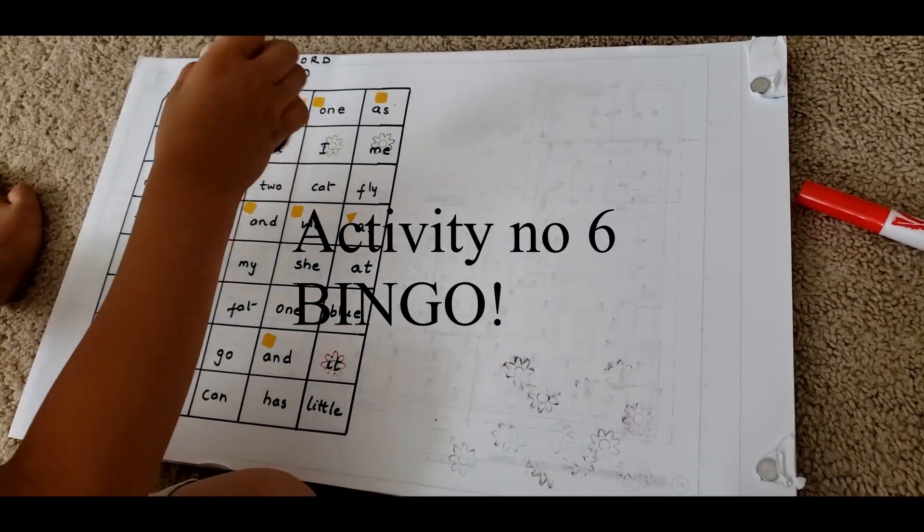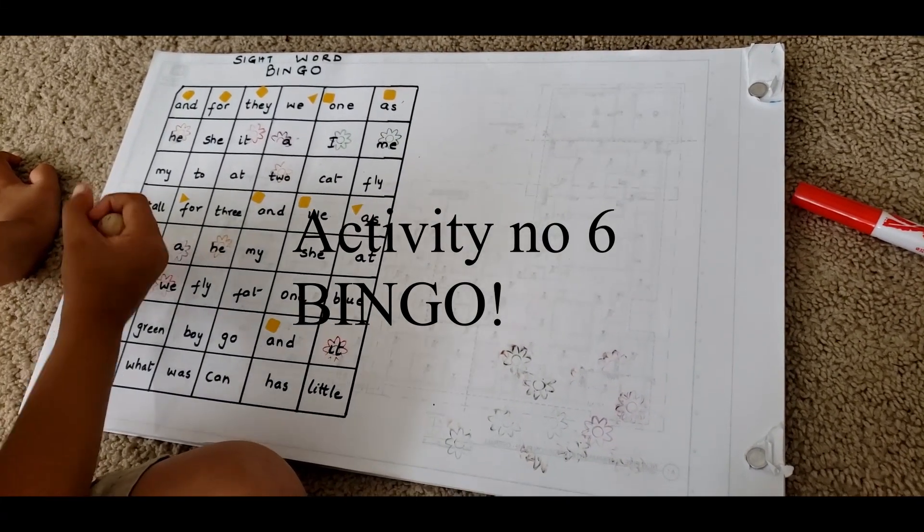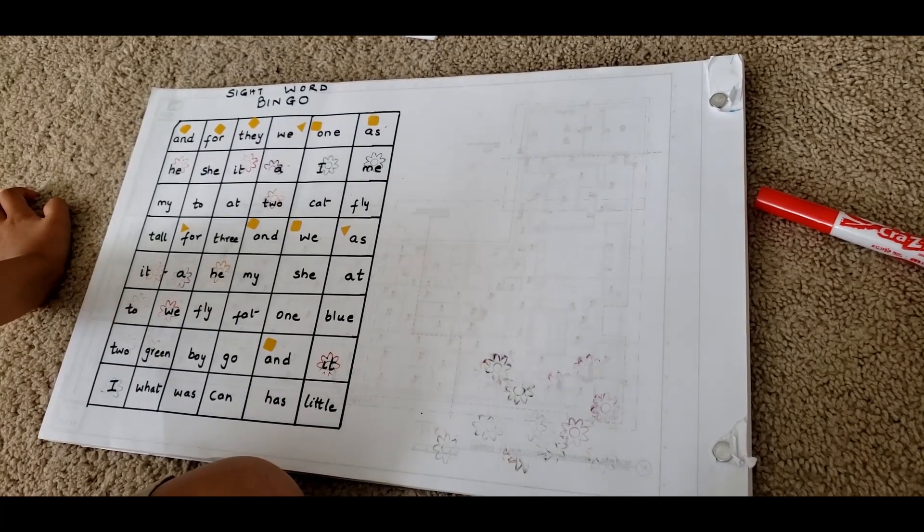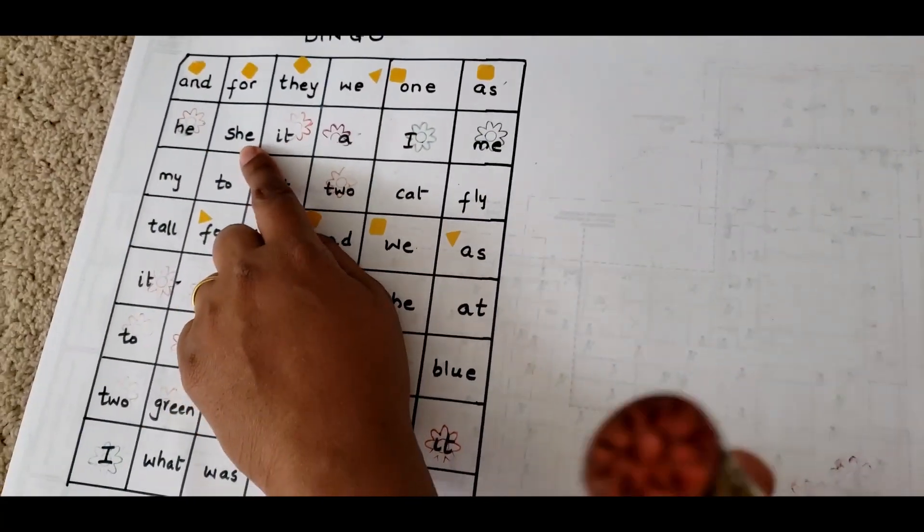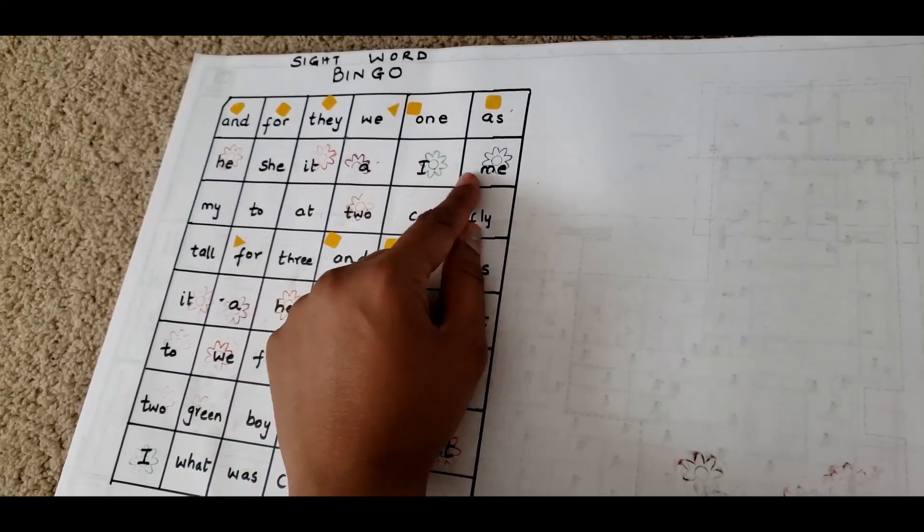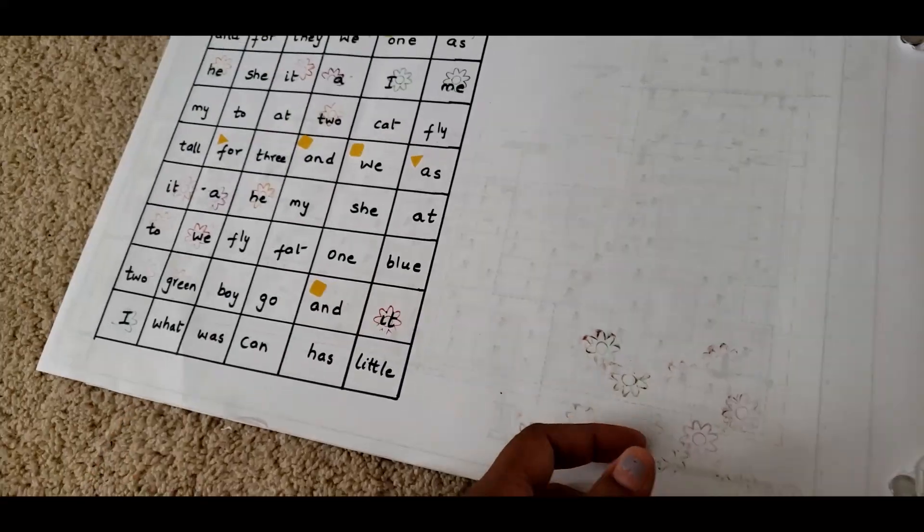Our next activity is sight word bingo. The difference between this and the previous rolling dice activity is that rolling dice is more for beginners; this is for advanced. There are several different sight words in this grid and they may or may not repeat.